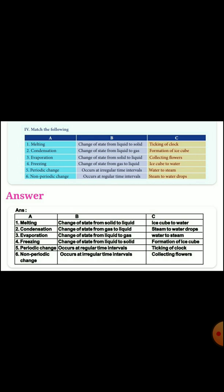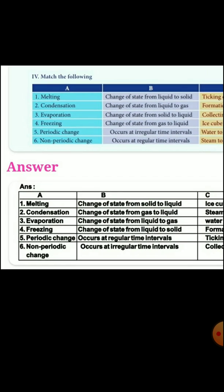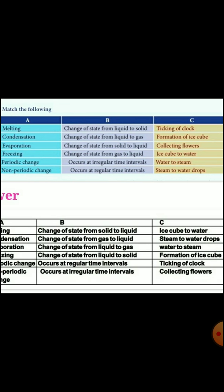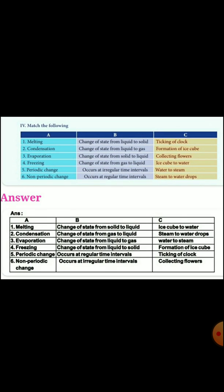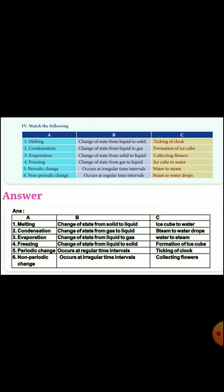Answer: melting is a change of state from solid to liquid. Example - ice cube to water. Condensation is a change of state from gas to liquid. Example - steam to water drops. Evaporation is a change of state from liquid to gas. Example - water to steam.